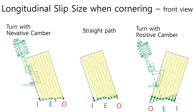On the other hand, with positive camber, the tire tends to bend in the opposite direction to the steering direction, because that is the natural movement of a tire with positive camber. Consequently, positive camber needs more steering wheel angle and produces a bigger slip size than negative camber does. That is why positive camber has a negative effect on tire wear and tire grip.